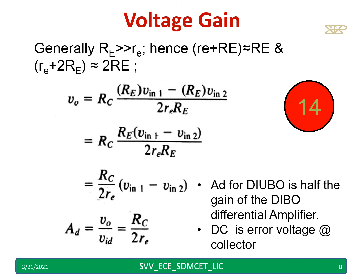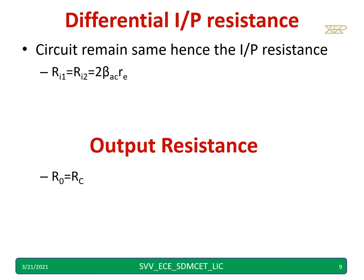DC what we get is an error voltage at the collector. Differential input resistance will remain same because circuit remains same. Hence, RI1 equal to RI2 equal to 2 beta AC into re. The derivation is already done for a dual input balanced output differential amplifier. Output you are taking across RC. Hence, R0 equal to RC.